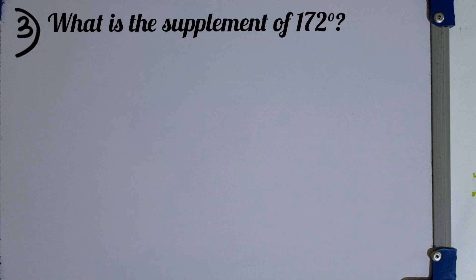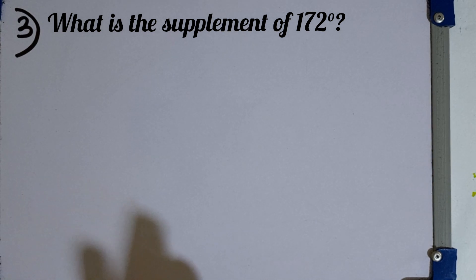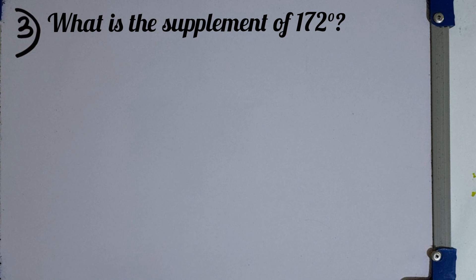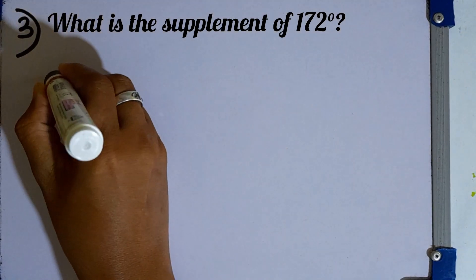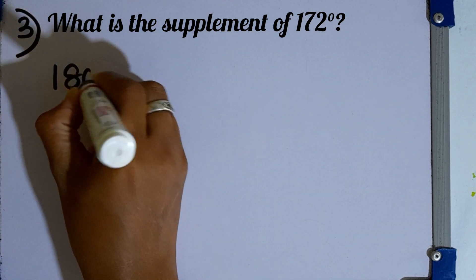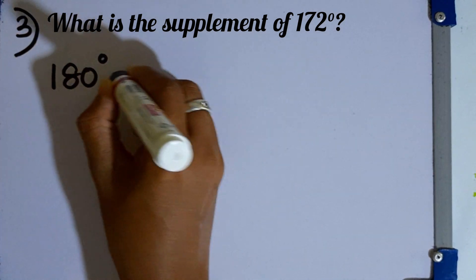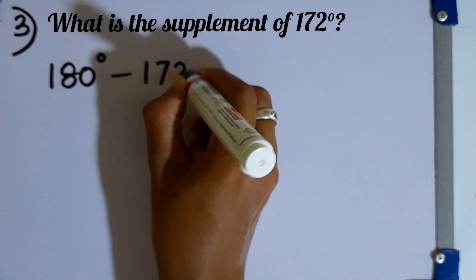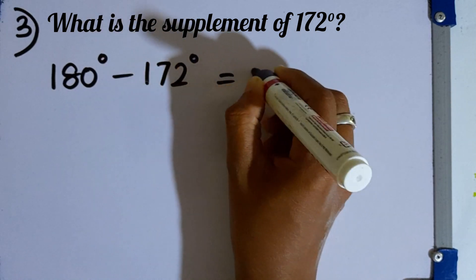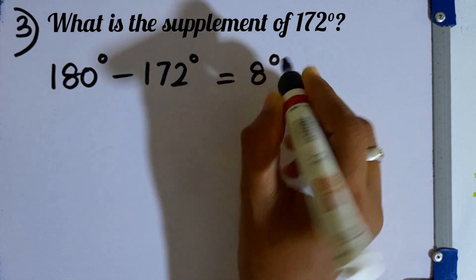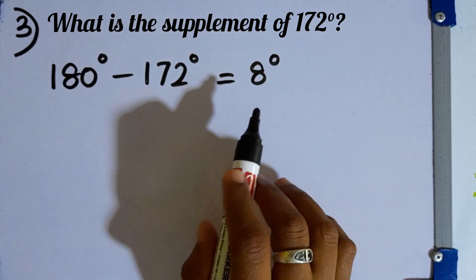Question number 3. What is the supplement of 172 degrees? To find the supplement, we subtract this angle from 180 degrees: 180 degrees minus 172 equals 8 degrees. That is the answer.